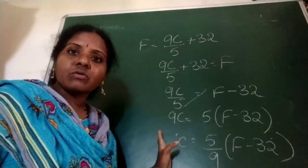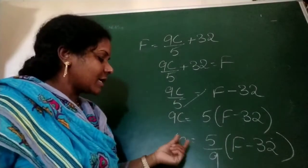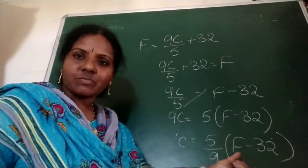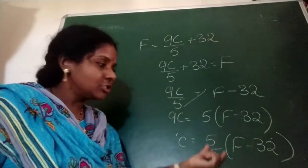Now degree Celsius equal to formula is 5 by 9 into F minus 32. So, Fahrenheit to Celsius scale formula is 5 by 9 into F minus 32.